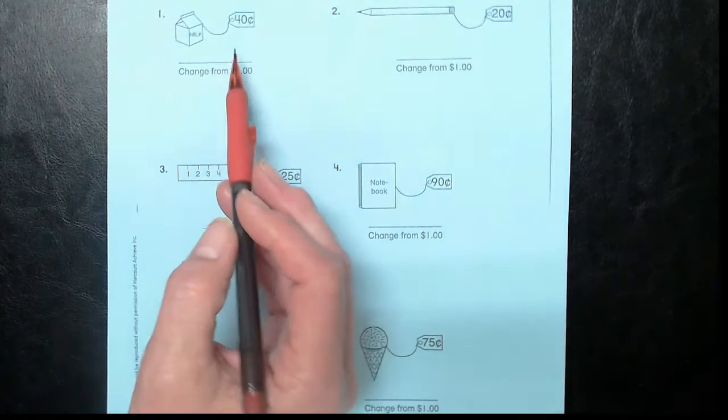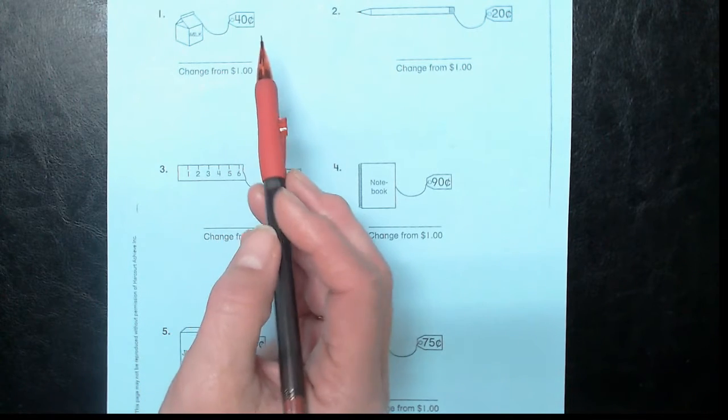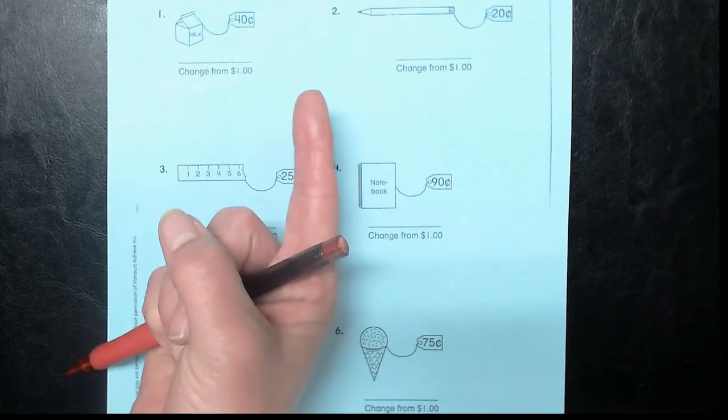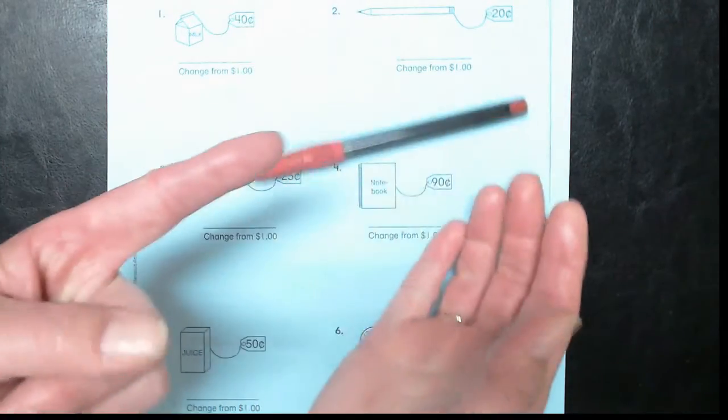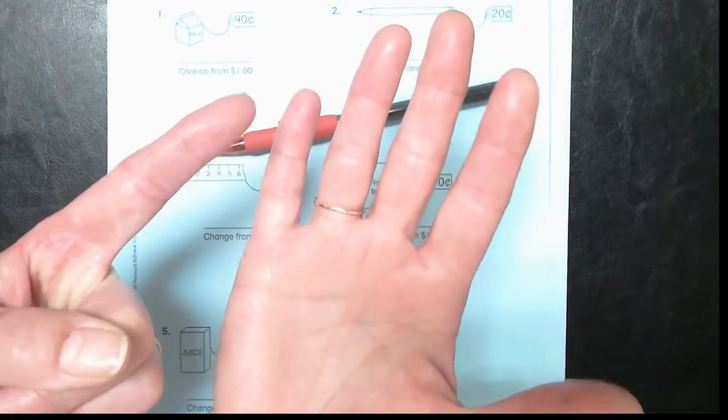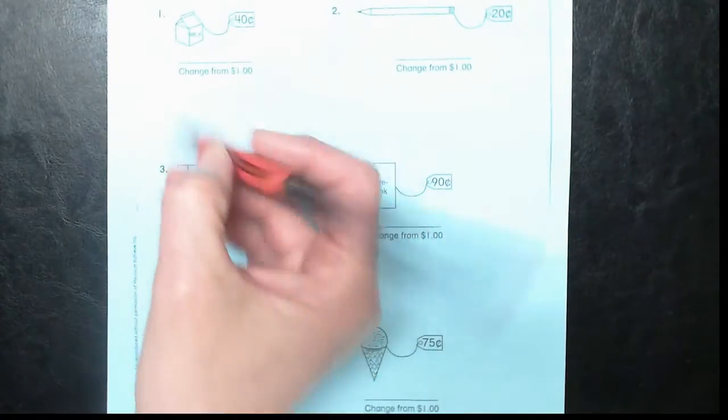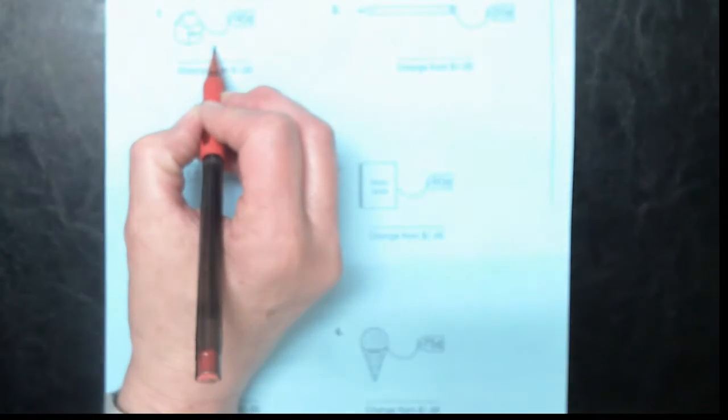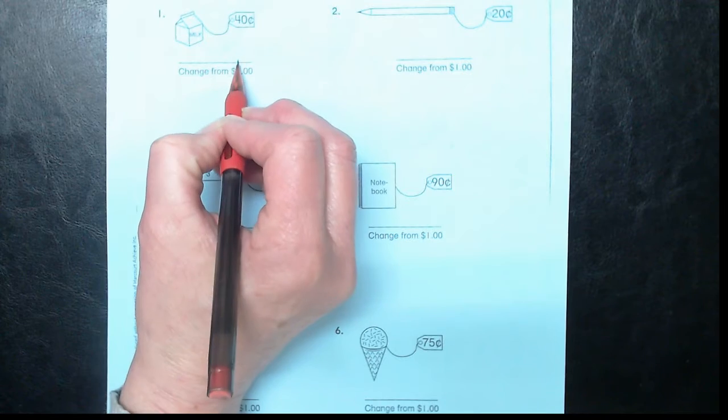Okay. So if you have 40 cents, how much more do you need to get to a dollar? Well, 50, 60, 70, 80, 90, $1. So each of those is 10. How many 10 cents? 60 cents. And we know that 60 plus 40 is 100. Okay. 100 cents are $1. So we're going to get back 60 cents.